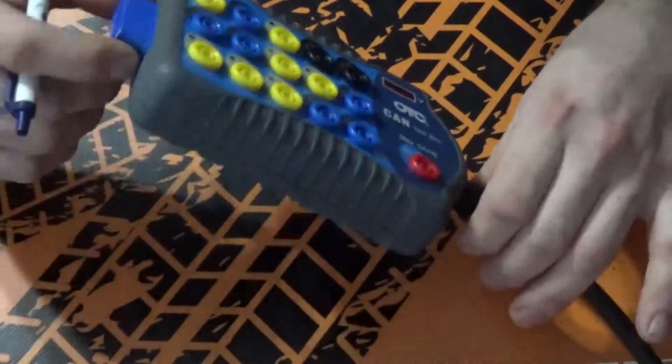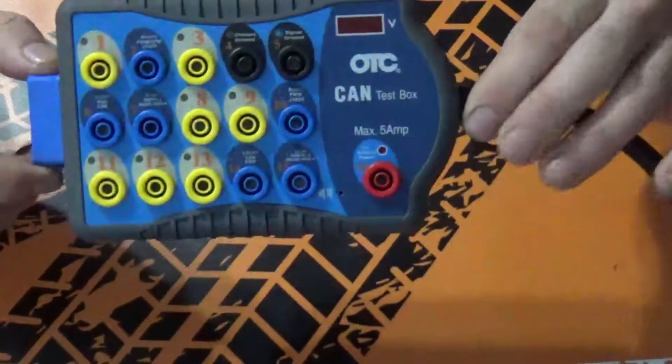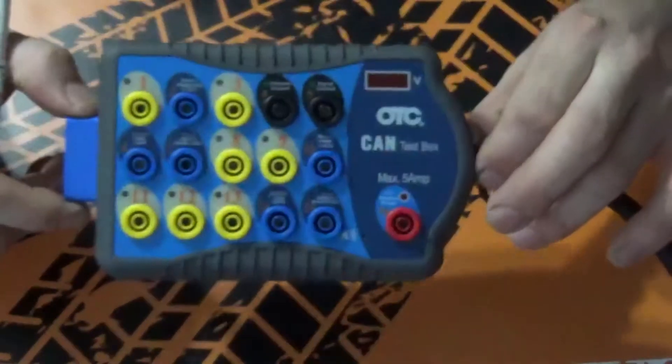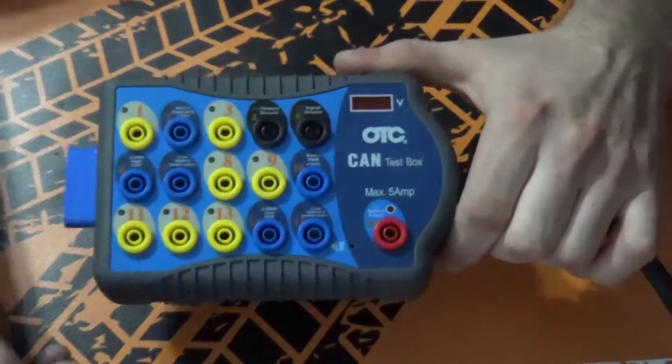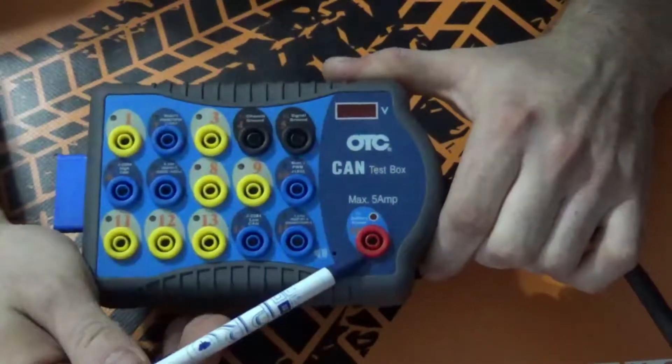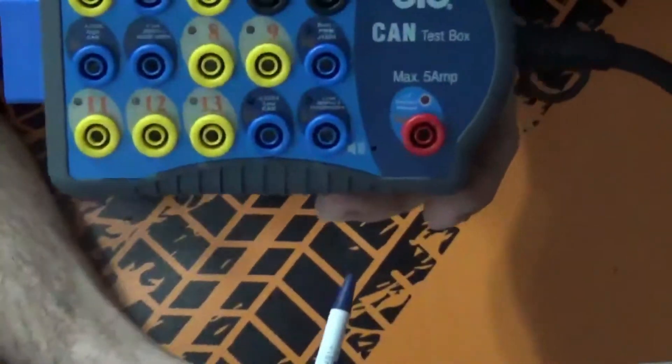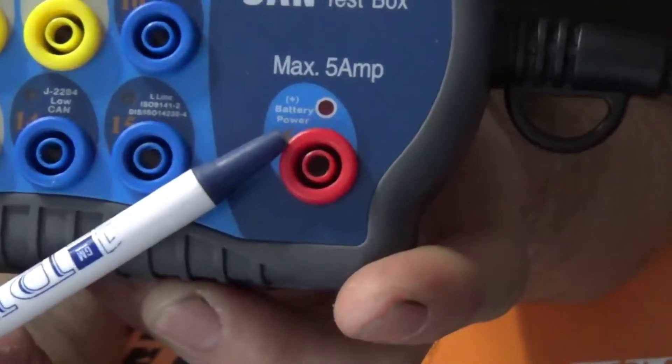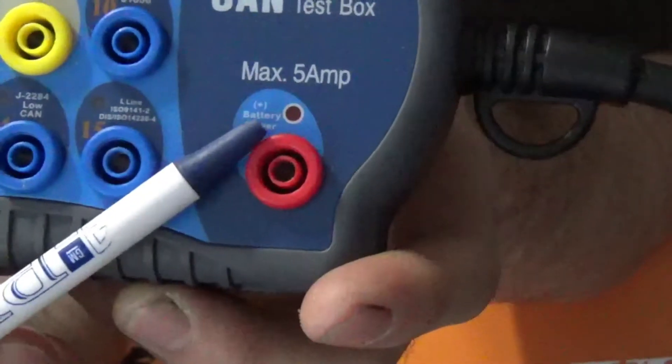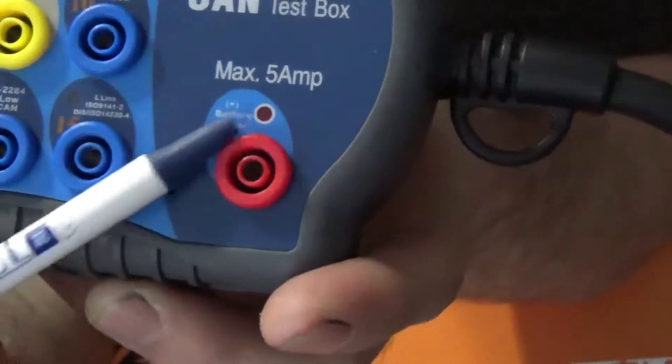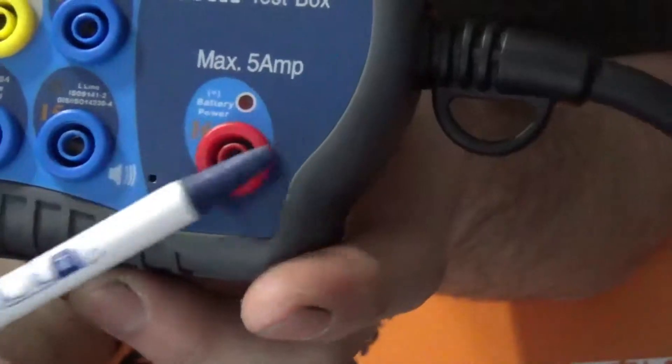So now we're going to get into what the colors on the CAN breakout box actually mean. As you can see, I have a red. Red is at pin 16. Pin 16 is always going to be positive. It's always going to be from battery positive. This is what's going to allow your scan tool to actually have constant power.